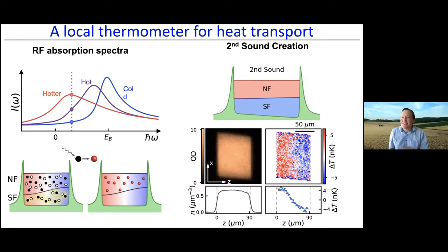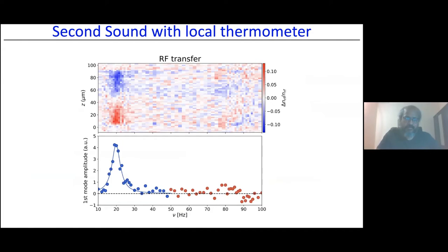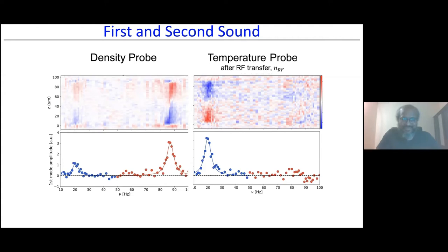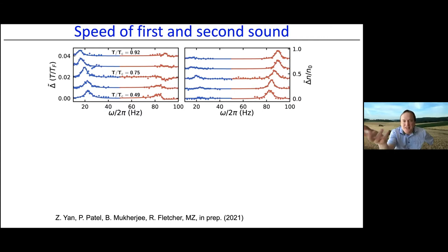A second question asks about the small spurious peak visible in the middle of the density sonogram between first and second sound. The speaker says it is likely an artifact — it does not appear consistently in the rest of the data — possibly from exciting transverse modes due to slight imperfections in the box geometry, or from a slightly non-equilibrated background reference image.